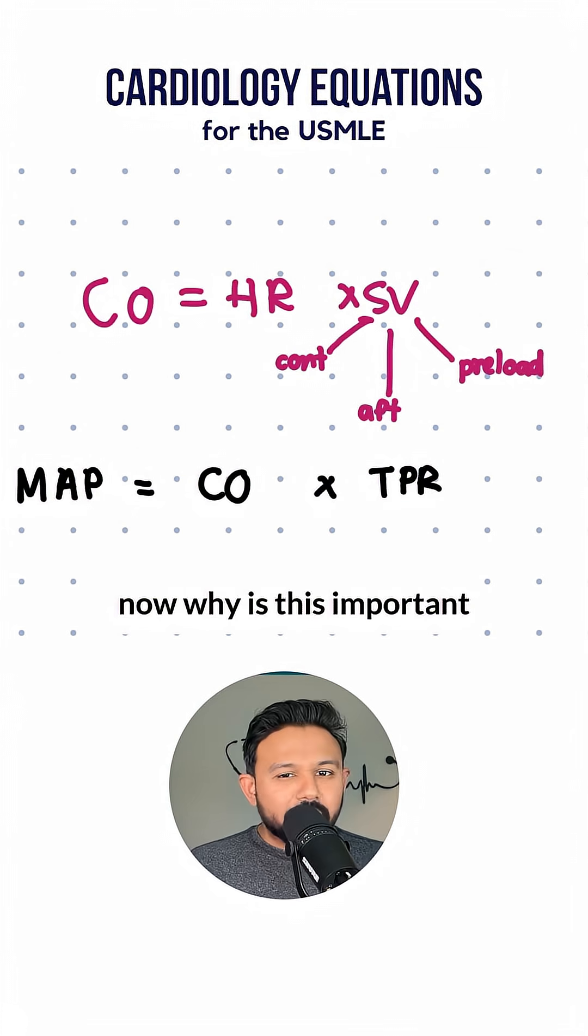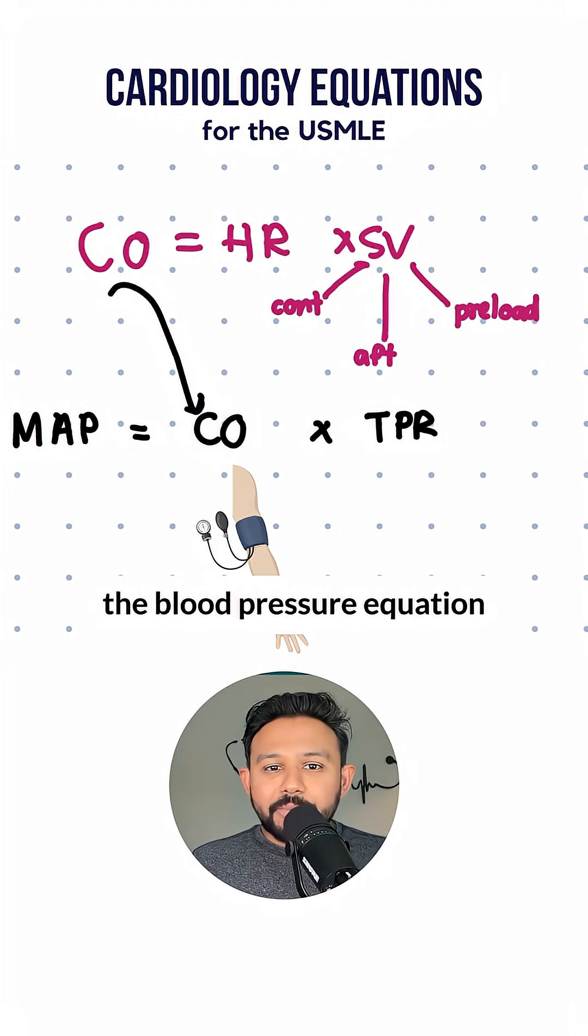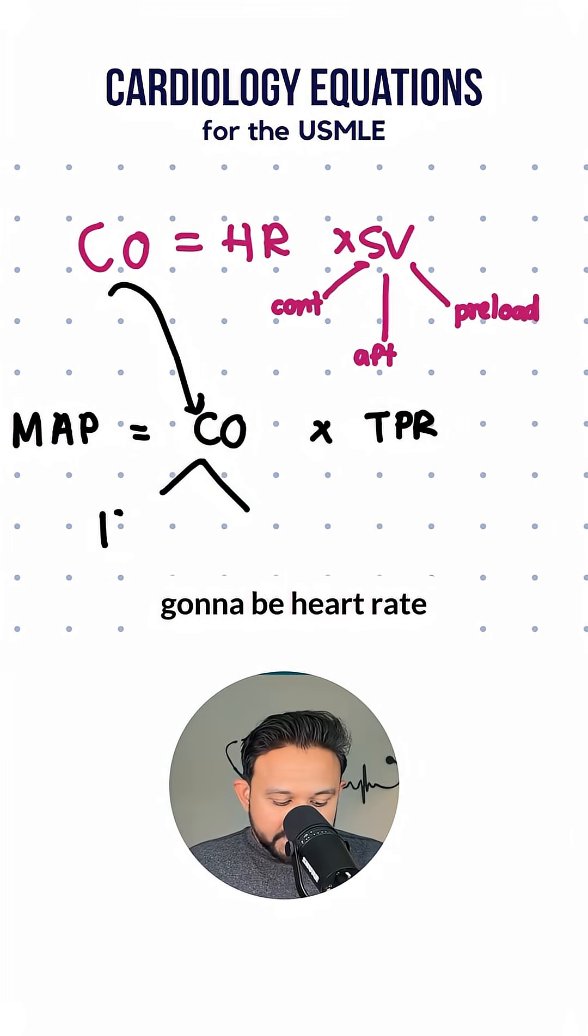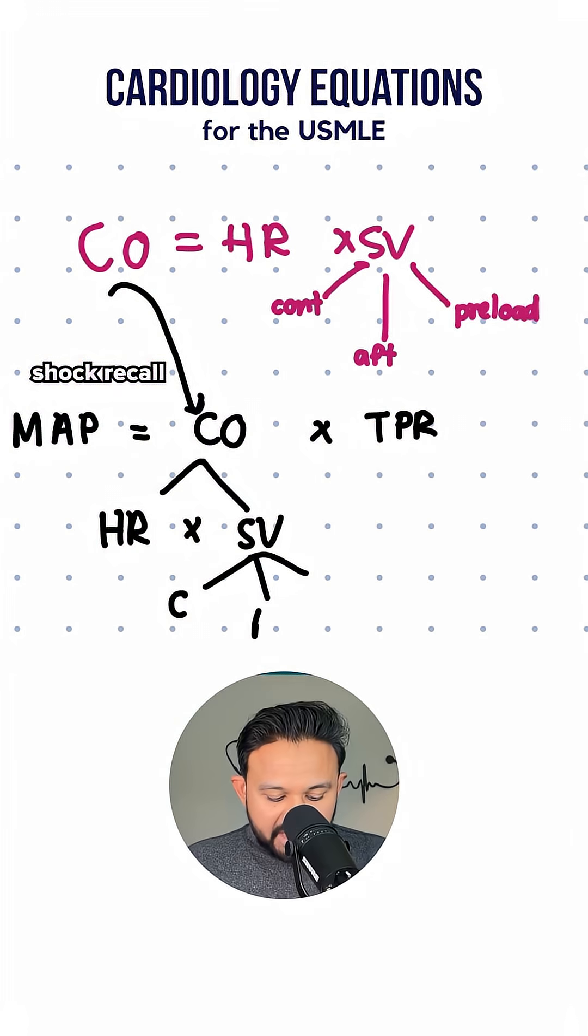Now, why is this important? Because if you are understanding the cardiac output equation, you can plug it into the blood pressure equation. So now cardiac output is going to be heart rate times stroke volume, and stroke volume is dependent on contractility, afterload, and preload.